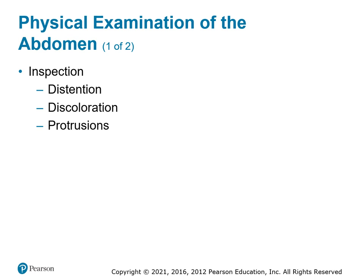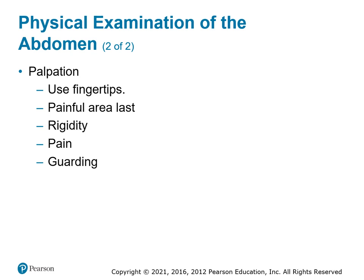Physical exam: first you're going to look at it. Look for distention — is it protruding more than normal? Is it discolored? Do you see anything coming out from underneath the skin, like intestines or hernias? For palpation, press the area that hurts last. If they say lower right quadrant hurts, start upper left and work your way down. You do not want to hit the painful area first because then they're never going to let you touch anything again. You're looking for rigidity — is it solid when you push? Do they grimace or are they tensing their muscles up so you can't push, which tells you they know there's going to be pain.